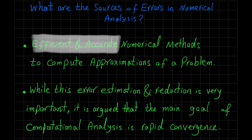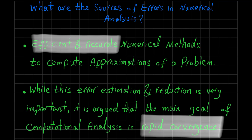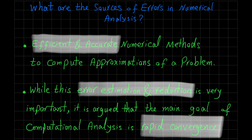While error estimation and reduction is very important for each numerical analysis, it is argued that the main goal of computational analysis is rapid convergence. But we have to also be careful about error estimation and reduction, because we don't want to obtain answers which are not accurate. That's the main danger of using numerical analysis if we are not aware of the sources of such errors. So in this video I'm going to talk about those sources of error in numerical and computational analysis.